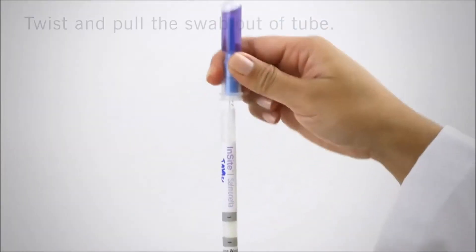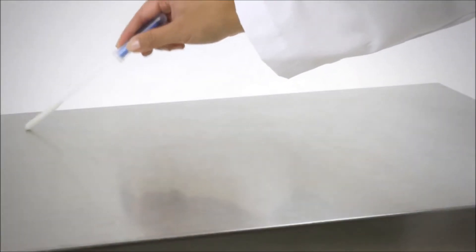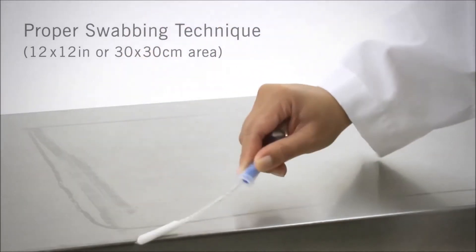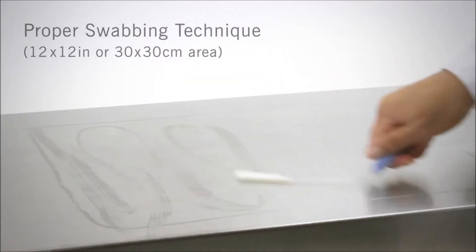Remove the swab from the tube. Swab a 12 by 12 inch or 30 by 30 centimeter square area in a criss-cross pattern, swabbing the area with even coverage.